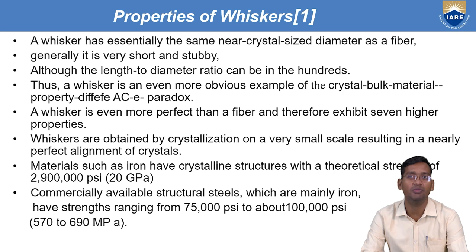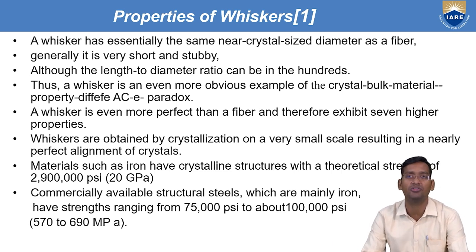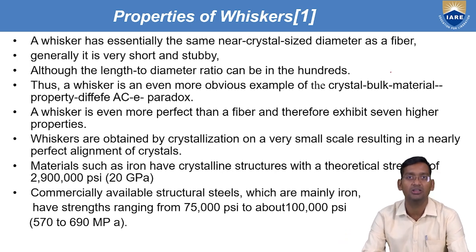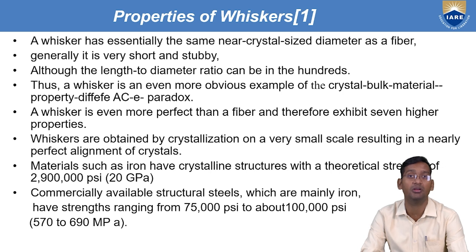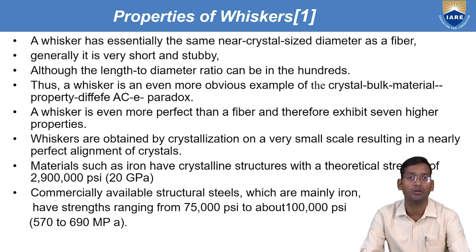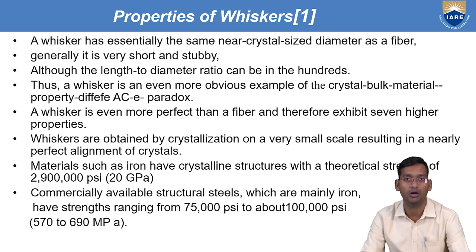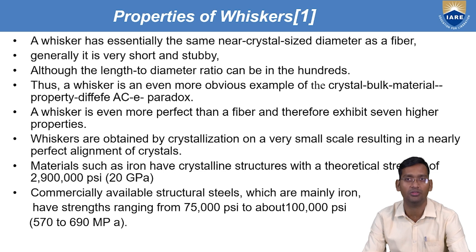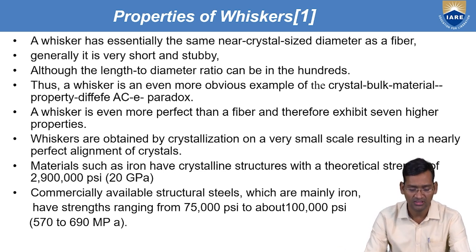The whisker is an even more obvious example of the crystal bulk material property. It depends on the size — as longer as it will be, they will have that much stiffer. A whisker is even more perfect than a fiber and therefore exhibits 7 times higher properties. So by size, whisker is a better option than fiber. But fiber has a longer length — more than 1000 times in whatever the diameter-to-length ratio. So wherever we require the short length, we can use whisker instead of fiber.